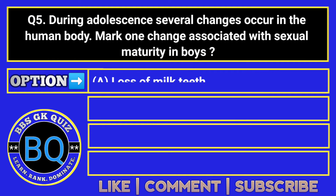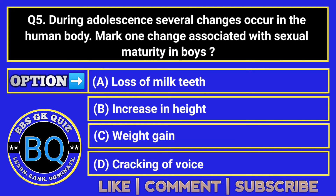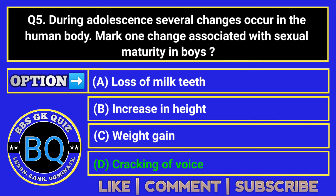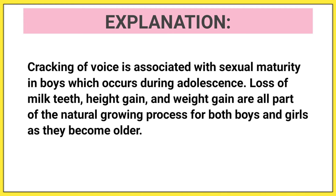During adolescence, several changes occur in the human body. Mark one change associated with sexual maturity in boys. The correct answer is Option D. Cracking of voice is associated with sexual maturity in boys, which occurs during adolescence. Loss of milk teeth, height gain, and weight gain are all part of the natural growing process for both boys and girls as they become older.